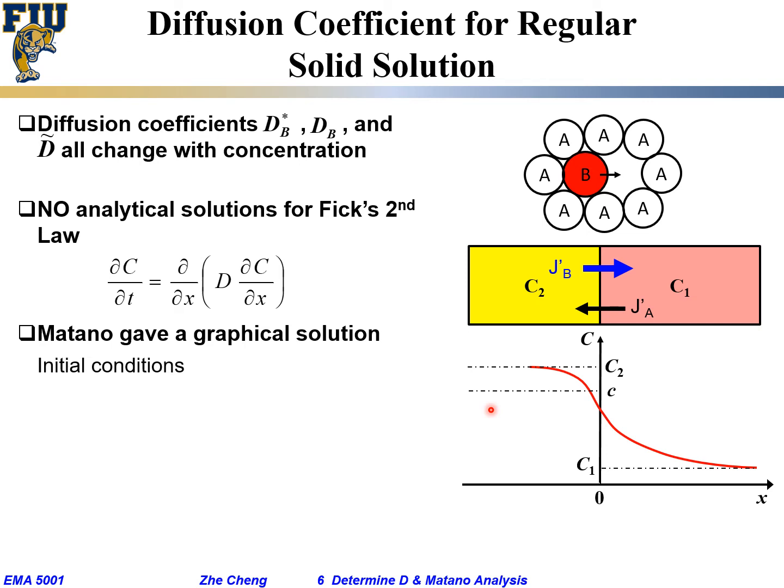Although we don't have analytical solutions, the initial condition still holds. What's our initial condition? Before any diffusion happens, right at the moment when we join these two pieces, x greater than zero, if this is my zero at the interface, it's C1. X smaller than zero, initially, it's everything C2. That's the so-called initial conditions.